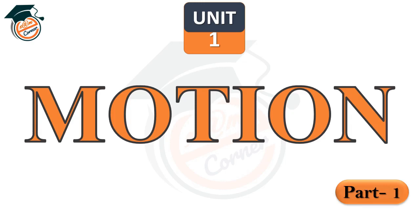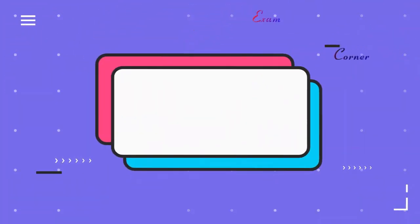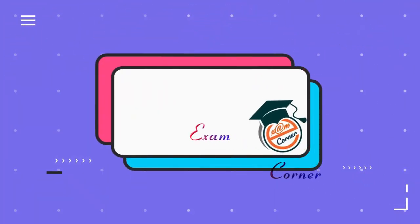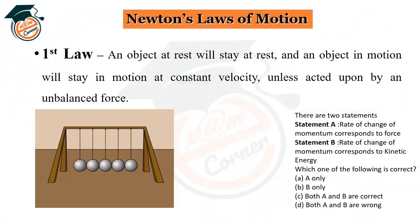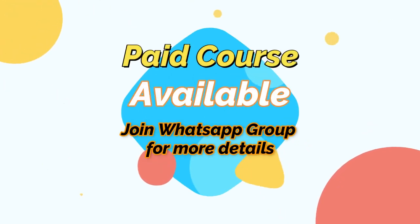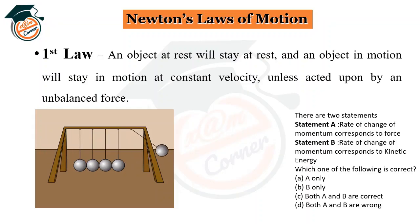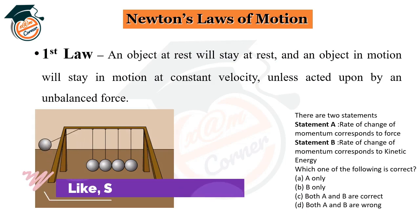Hello students, welcome to Exam Corner. This is part of our first unit: Motion. Newton's laws of motion — Newton's first law states that an object at rest will stay at rest, and an object in motion will stay in motion at constant velocity unless acted upon by an unbalanced force.